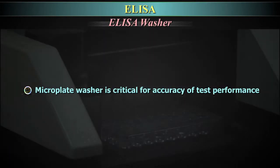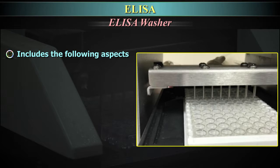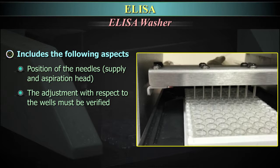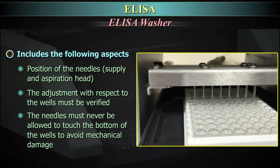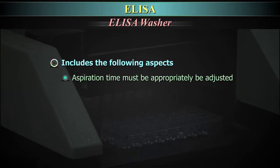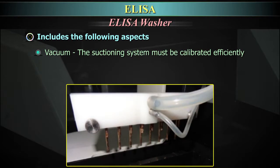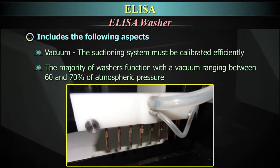ELISA washer. The microplate washer is critical for accuracy of test performance. Key aspects include: position of the needles, supply and aspiration head — the adjustment with respect to the wells must be verified. The needles must never be allowed to touch the bottom of the wells to avoid mechanical damage. Aspiration time must be appropriately adjusted, and the suction system's needles must be clean and free of obstructions. Distributed volume has to be calibrated. The suctioning system must be calibrated efficiently; the majority of washers function with a vacuum ranging between 60 and 70% of atmospheric pressure.